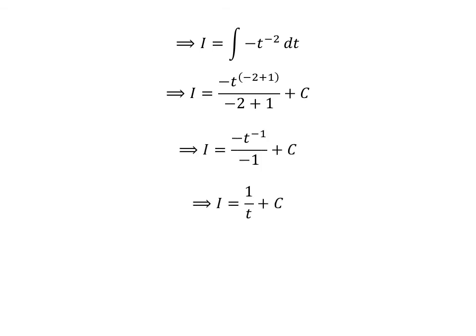Since minus 2 plus 1 equals minus 1, cancelling out the minus signs in the numerator and denominator and shifting t to the power of minus 1 to the denominator gives us I equals 1 upon t plus capital C.